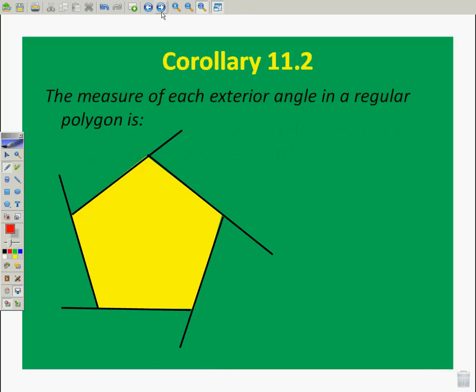Corollary 11.2. The measure of each exterior angle in a regular polygon. Once again, I know that I have 360 degrees total. And I'm going to divide that by the number of sides. So, it's going to be 360 divided by n because the total would be 360. One, two, three, four, five. I've got five angles. I'm going to divide the total number of degrees, 360, by five.